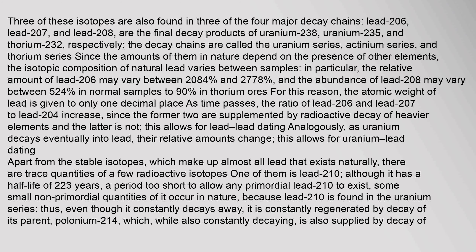Three of these isotopes are found in three of the four major decay chains: lead-206, lead-207, and lead-208 are the final decay products of uranium-238, uranium-235, and thorium-232 respectively. The decay chains are called the uranium series, actinium series, and thorium series. The isotopic composition of natural lead varies between samples; the relative amount of lead-206 may vary between 20.84% and 27.78%, and the abundance of lead-208 may vary between 52.4% in normal samples to 90% in thorium ores. The atomic weight of lead is given to only one decimal place. As time passes, the ratio of lead-206 and lead-207 to lead-204 increases, since the former two are supplemented by radioactive decay of heavier elements — this allows for lead-lead dating.